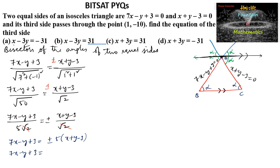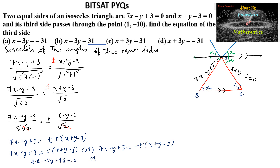Taking the positive case: 7x minus y plus 3 is equal to 5 times of x plus y minus 3. Taking the negative case: 7x minus y plus 3 is equal to negative 5 times of x plus y minus 3. From the negative case, 7x minus 5x gives 2x, minus y minus 5y gives minus 6y, and 3 plus 15 gives plus 18 equals 0. From the positive case, 7x plus 5x gives 12x, minus y plus 5y gives plus 4y, and 3 minus 15 gives minus 12 equals 0.